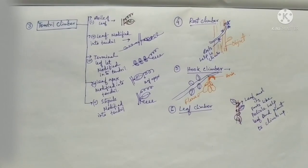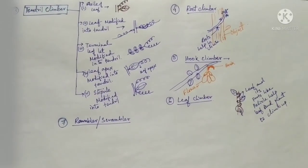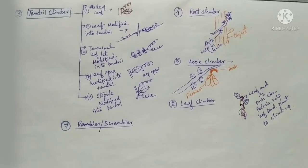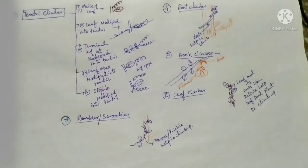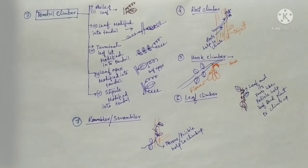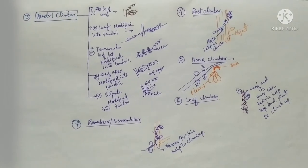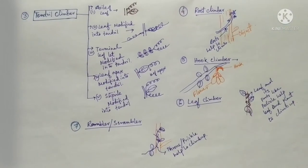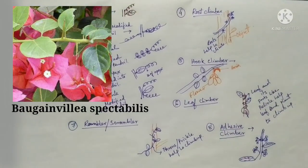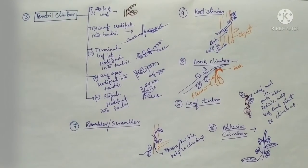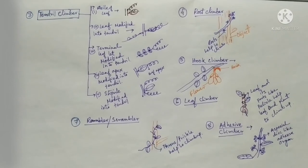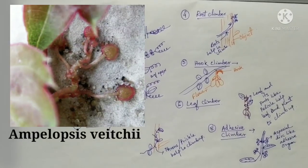The next type is rambler or scrambler. When a plant climbs up another object or plant through its thorns or prickles, it is known as a rambler or scrambler. Next is adhesive climber. In the case of adhesive climbers, the plant climbs through a special disc-like organ which is adhesive in nature and helps the plant adhere to another object or plant to grow upward.